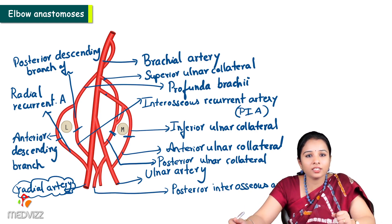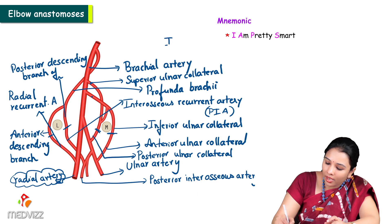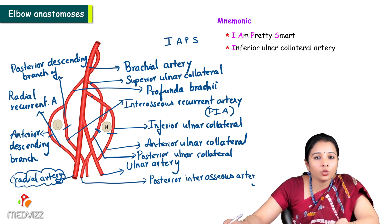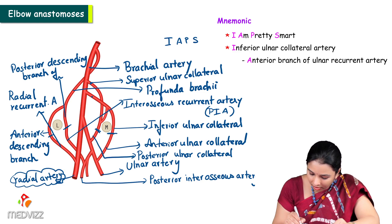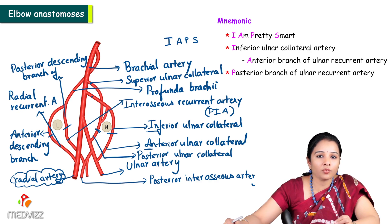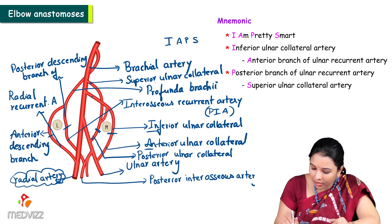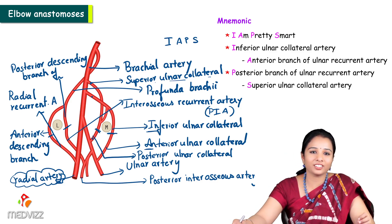To remember these anastomoses easily, we can use the mnemonic 'I am pretty smart.' I is for the inferior ulnar collateral artery, which goes with the anterior branch of the ulnar recurrent artery — so I and A together. The posterior branch of the ulnar recurrent artery goes with the superior ulnar collateral artery. This mnemonic helps remember the medial side anastomoses partially.